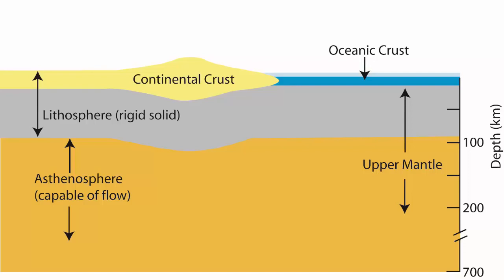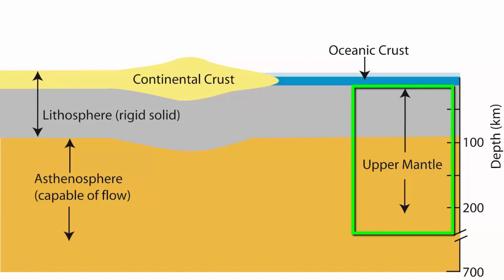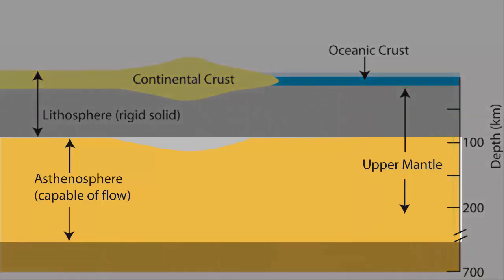To understand how crust floats, we need to look more closely at the top of the mantle and how it interacts with the crust. Because of the water content of the mantle and the temperatures and pressures encountered in the zone between about 100 and 300 kilometers depth, the region there, called the asthenosphere, behaves like a plastic solid and is capable of flow over long periods of time.